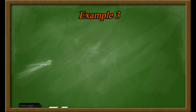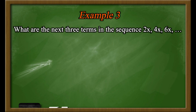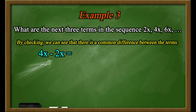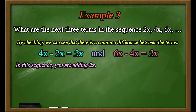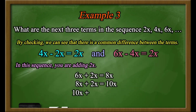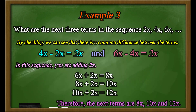Example number 3: What are the next 3 terms in the sequence 2x, 4x, 6x, and so on? By checking, we can see that there is a common difference between the terms: 4x minus 2x equals 2x, and 6x minus 4x is also 2x. We add the common difference of 2x to the last term to get the next terms: 6x plus 2x equals 8x; 8x plus 2x equals 10x; and 10x plus 2x equals 12x. Therefore, the next terms are 8x, 10x, and 12x.